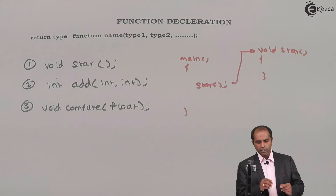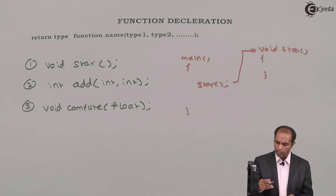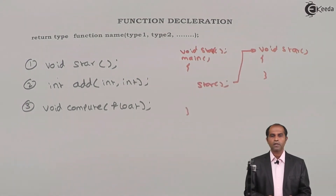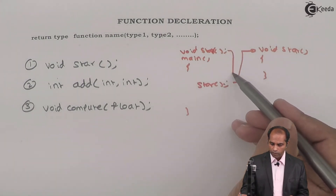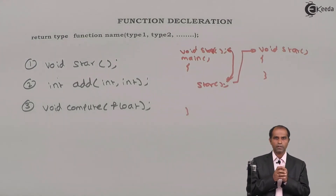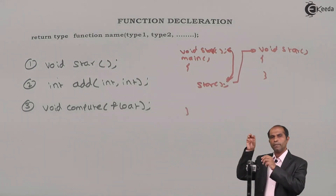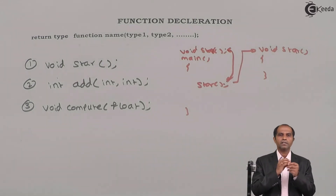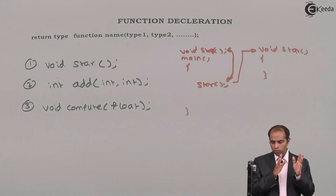A declaration will have a semicolon, and a call will have a semicolon, but not a definition. When I add the declaration — void star(); — and then give a call to star, the compiler will first make a cross-check: have I written a proper declaration, have I passed the correct number of arguments, have I accepted and returned a value correctly? All this is compared one by one, and then the compiler transfers the call. So your declaration is not just for declaring details — it actually enables a comparison whenever a function call is made.